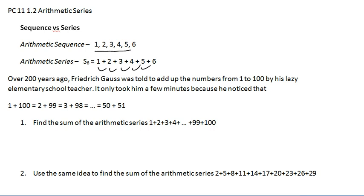Okay, a little bit of history here. Over 200 years ago, Friedrich Gauss needed to add up the numbers 1 to 100. Okay, what he noticed was that 1 plus 100 is the same as 2 plus 99, is the same as 3 plus 98.